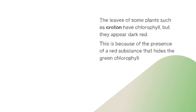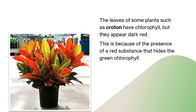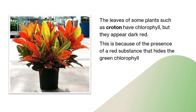The leaves of some plants such as croton have chlorophyll, but they appear dark red. This is because of the presence of a red substance that hides the green chlorophyll.